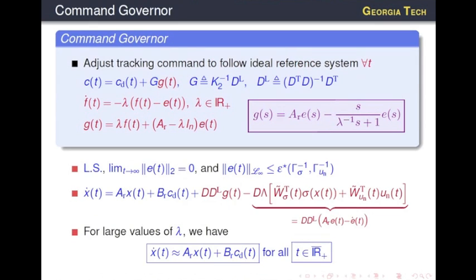Mathematically speaking, C, the desired command CD, is augmented by this signal. Capital G is a matrix of this form, and small g is the output of the command governor. The command governor is a linear system with this simple form, and here we only have one tuning parameter, lambda. AR comes from the reference model.